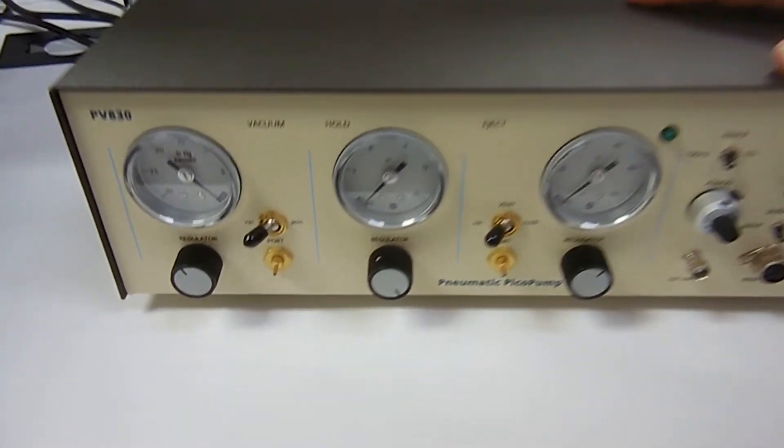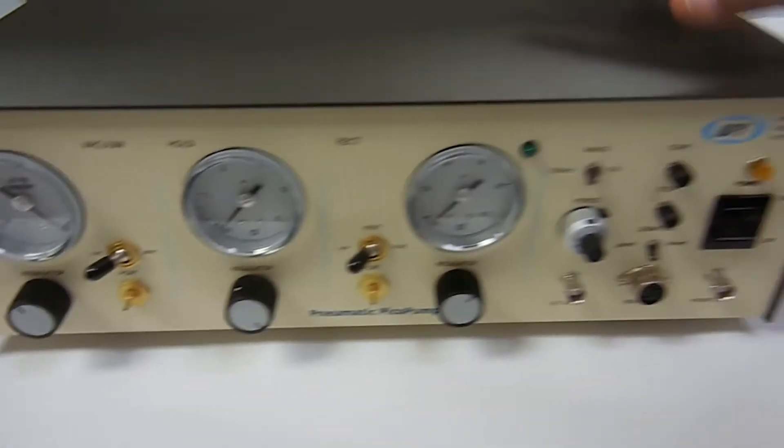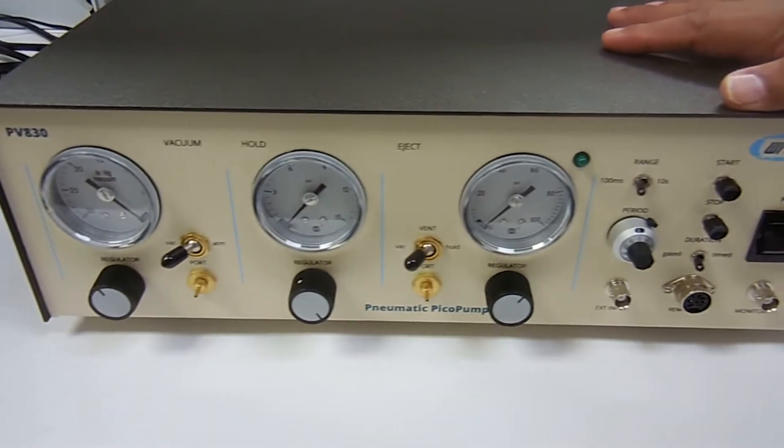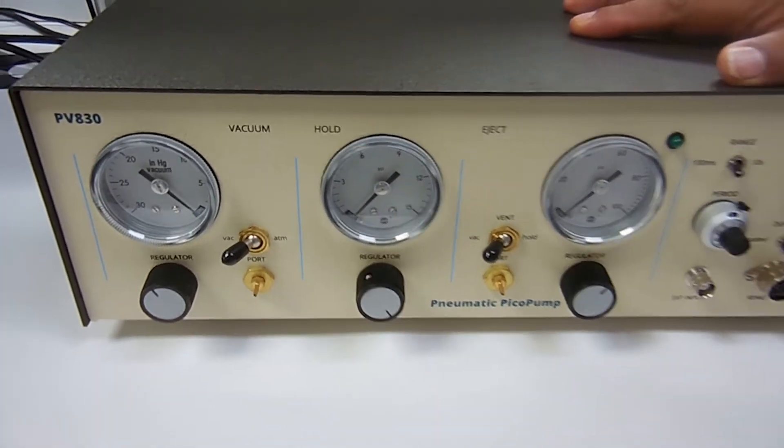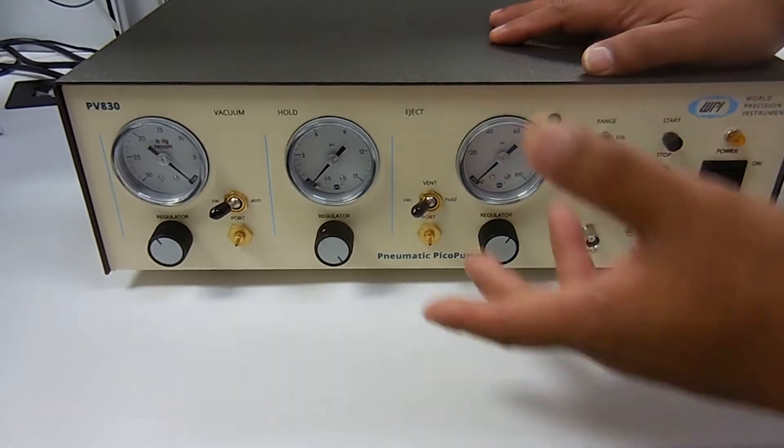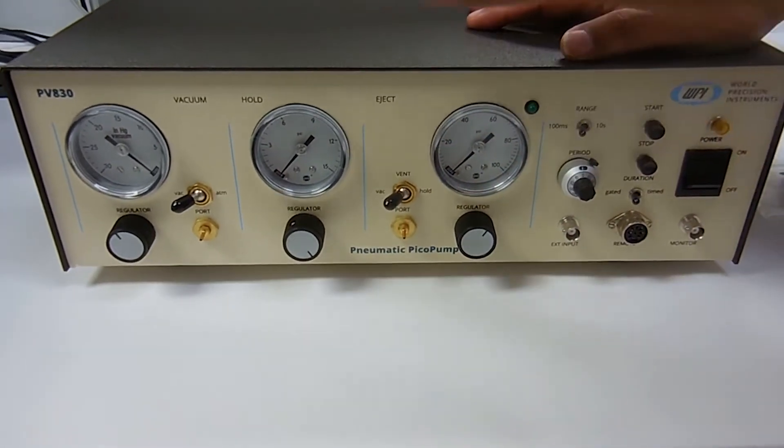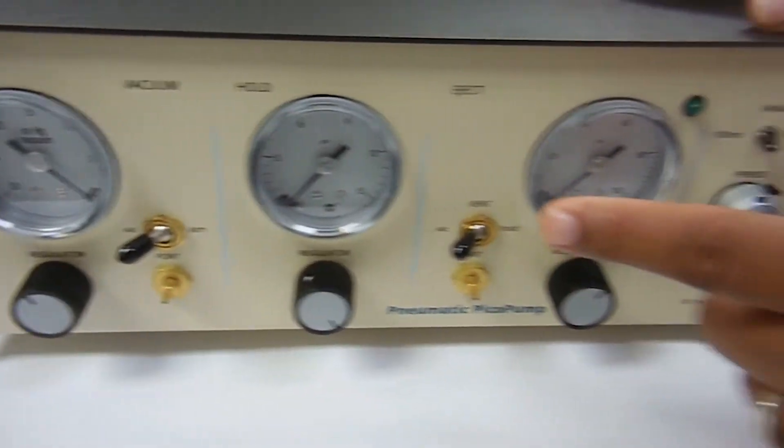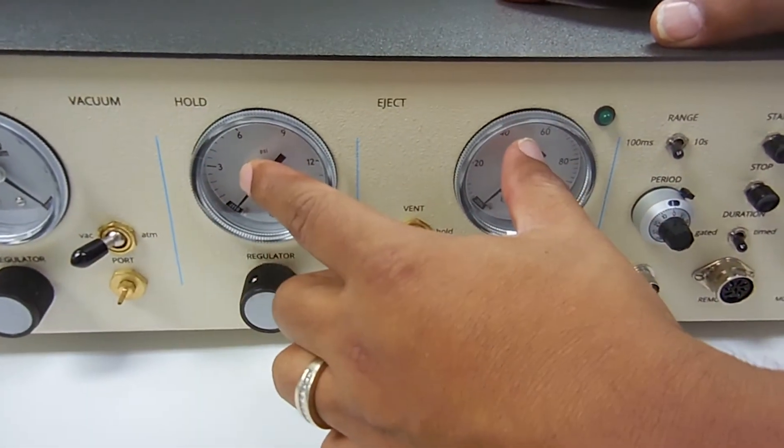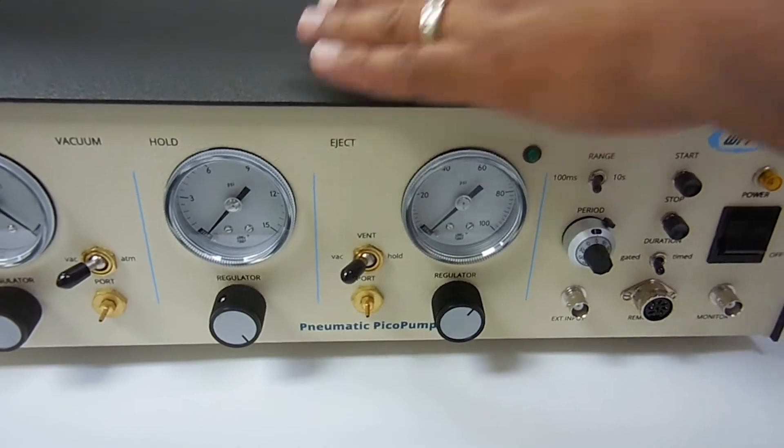Now we're going to discuss the setup of the PV-820 and the 830. Right here we have what we call the PV-830. The difference between the PV-820 and the 830 is that the 830 has a regulator for the vacuum, and the PV-820 just has for the hold and eject.